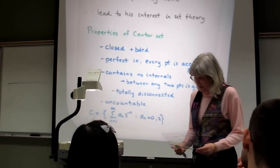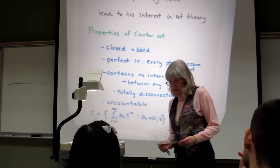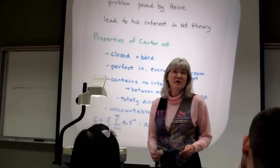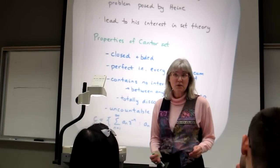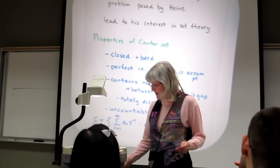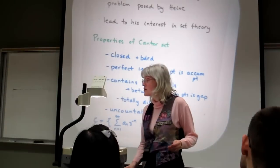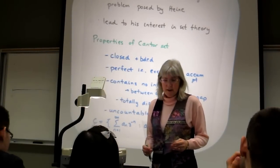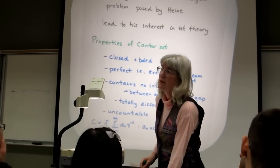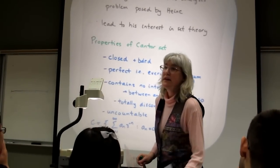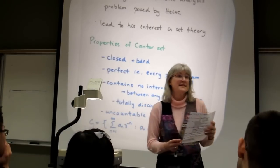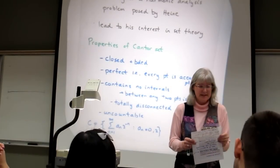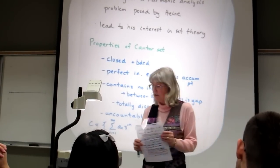So it's a mixed-up set: on one hand, it's very large — uncountable and perfect, with every point a limit point. But on the other hand, it's very small in that there are no open sets within it; there's a gap between any two elements. So in that sense it's very small.